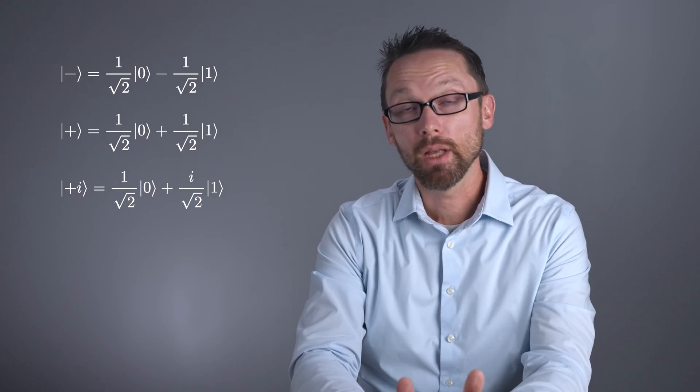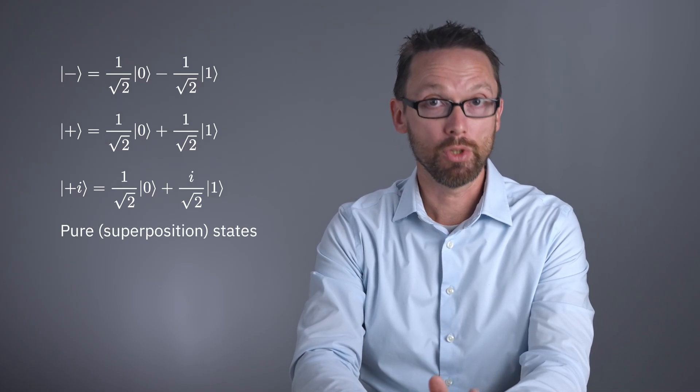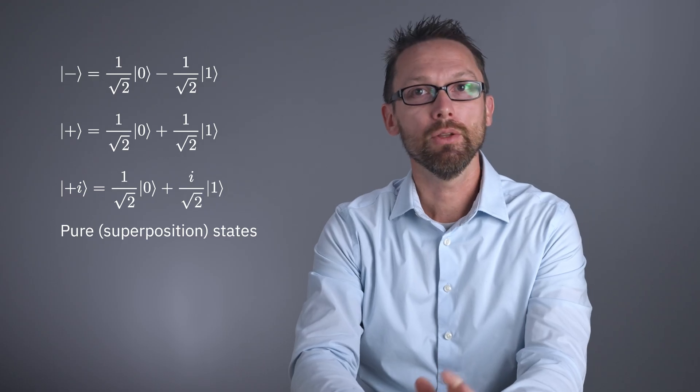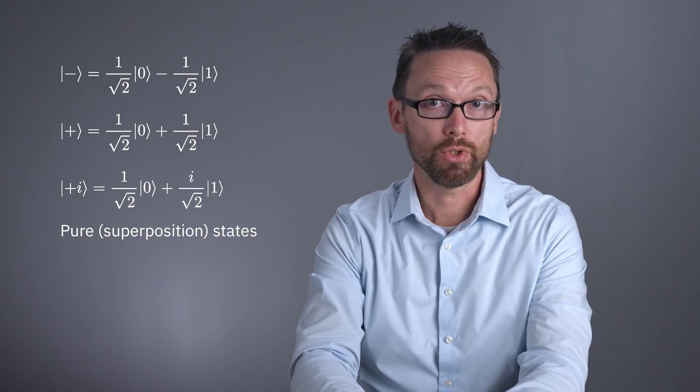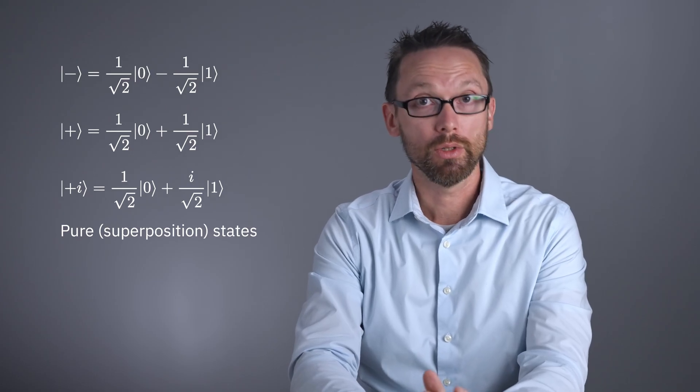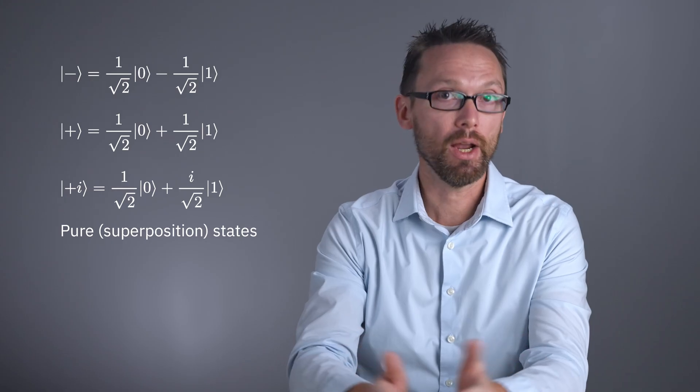But these are very different states because of the relative phases. All these points lie on the surface of a Bloch sphere. We call these pure superposition states, meaning that the relative probabilities and relative phase are well-defined with the equation we've shown. Or in other words, the state is coherent. It hasn't lost any of its information to the environment.